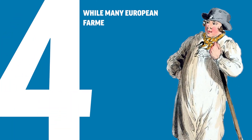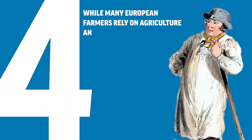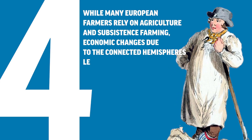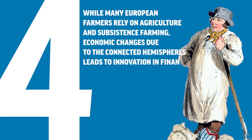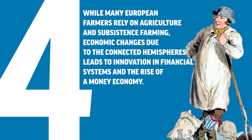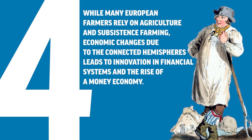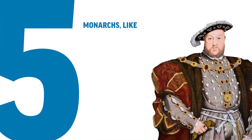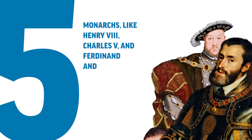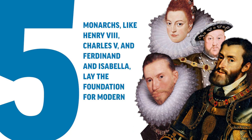Number four, while many European farmers rely on agriculture and subsistence farming, economic changes due to the connected hemispheres leads to innovation, financial systems, and the rise of a money economy. Number five, monarchs like Henry VIII, Charles V, and Ferdinand and Isabella lay the foundation for modern political institutions. But how did it all get that way? Let's contextualize.